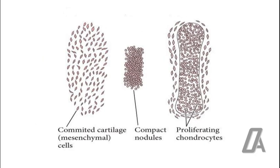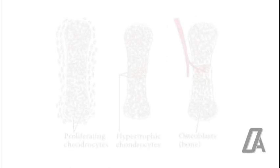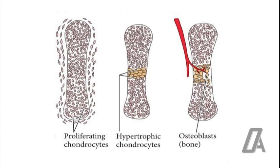During endochondral bone formation, the first step is the differentiation of mesenchymal cells into chondrocytes. These chondrocytes form a rough model which is enclosed by perichondral cells. The cartilage mass then grows both by interstitial growth and by apposition, as cartilage cells hypertrophy and their matrix begins to get calcified.